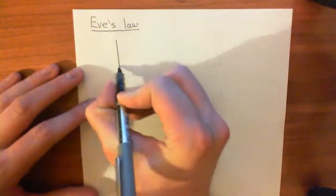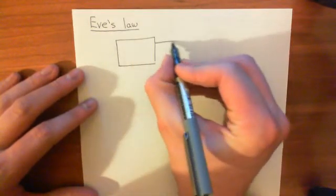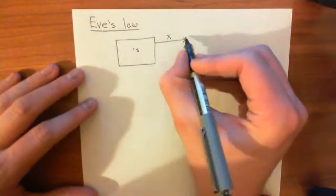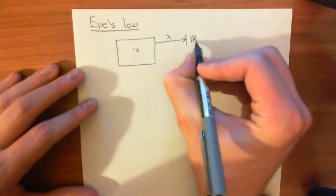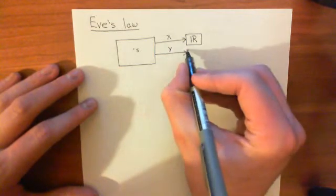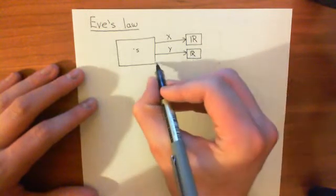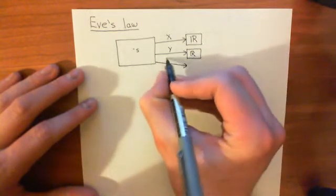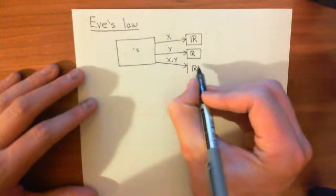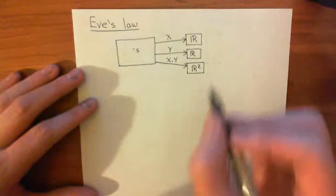Let's say we have an abstract probability space with two random variables defined on it. Every outcome in this abstract probability space is ascribed an x value, which is a real number, and it's ascribed a y value, which is also a real number. We can then build the joint random variable of x and y, which will ascribe every outcome an ordered pair of real numbers — some ordered pair in R².